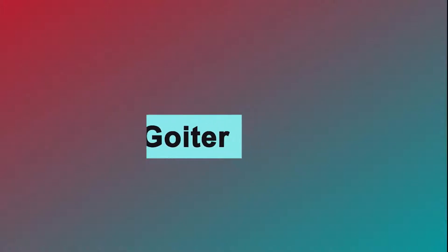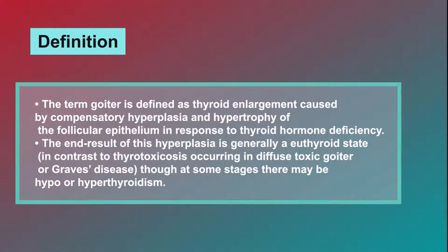Today I will talk about goiter. The term goiter is defined as thyroid enlargement caused by compensatory hyperplasia and hypertrophy of the follicular epithelium in response to thyroid hormone deficiency. The end result of this hyperplasia is generally a euthyroid state, in contrast to thyrotoxicosis occurring in diffuse toxic goiter or Graves disease, though at some stages there may be hypo or hyperthyroidism.